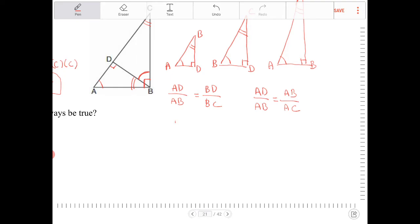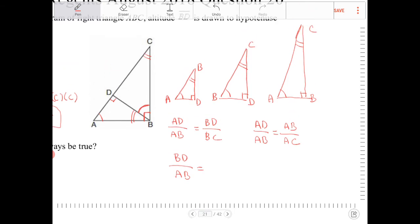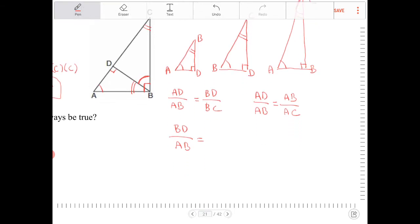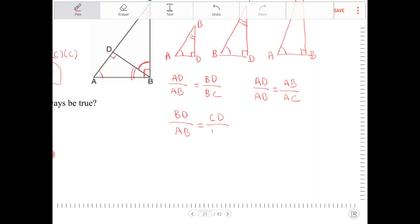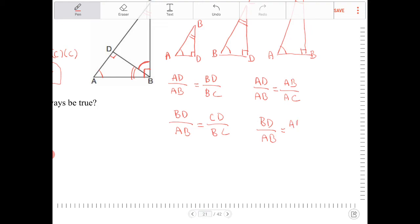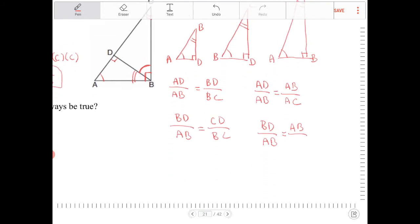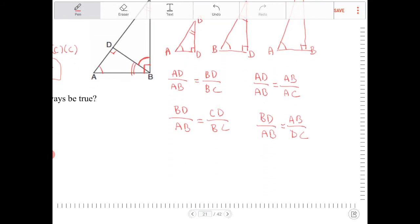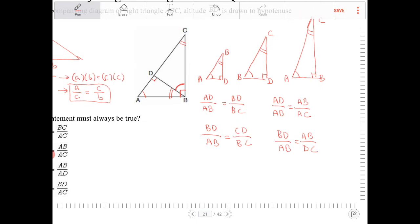I can say BD over AB is equal to CD over BC. And similarly, I can say BD over AB is equal to AB over DC.